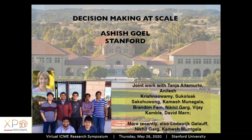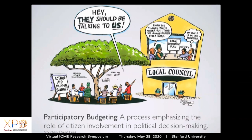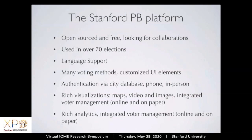Today I'll primarily focus on one kind of decision we call participatory budgeting — a process emphasizing citizen involvement in political decision making. The idea is that a city takes a small portion of its budget and sets it aside for direct vote by the public. Many cities in the U.S. do this. We have an open-source, free platform that facilitates participatory budgeting. It's been used in over 70 elections in North America so far, and offers many voting methods, languages, authentication methods, and visualizations.